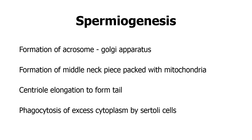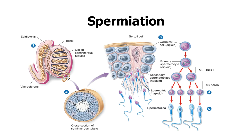In summary, spermiogenesis is where the Golgi apparatus allows you to form the acrosomal cap with its enzymes, the middle neck piece is formed and packed with mitochondria, the centriole elongates to form the tail, and there is phagocytosis of excess cytoplasm by Sertoli cells. There is also condensation of the nuclear material at the level of the head, so the chromatin condenses within the head.